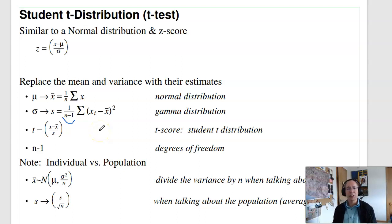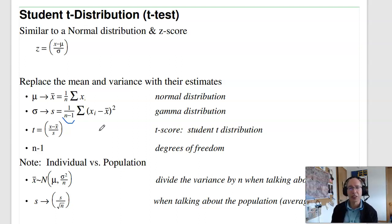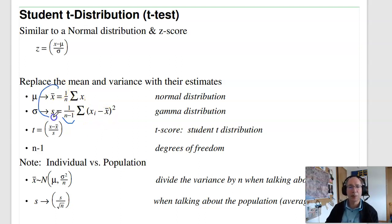There are two reasons for dividing by n-1. First, if I have a single data point, I can't estimate two parameters from it — I need at least two. If you only have a single data point, the standard deviation is infinity. Second, dividing by n-1 gives an unbiased estimator of the population standard deviation. Using the estimated mean and standard deviation, I come up with a t-score — just like the z-score but using estimates rather than actual population parameters.